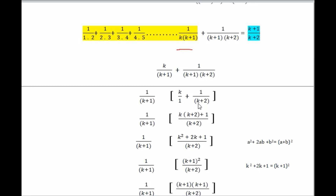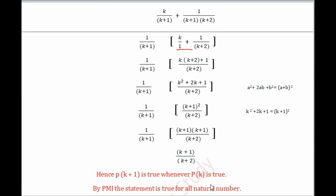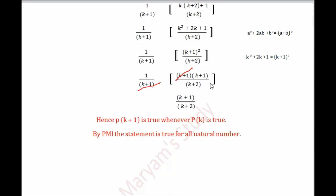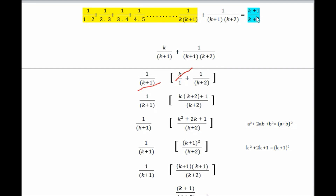Taking LCM of (k+2) and 1, which is (k+2): k gets multiplied by (k+2) giving k²+2k, plus 1, all divided by (k+2). So we have 1/(k+1) times (k²+2k+1)/(k+2). Now k²+2k+1 equals (k+1)² by the algebraic formula. Writing (k+1)² as (k+1)(k+1), the (k+1) in the numerator cancels with the (k+1) outside, leaving (k+1)/(k+2).